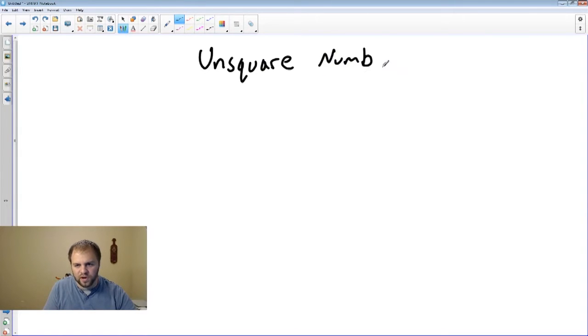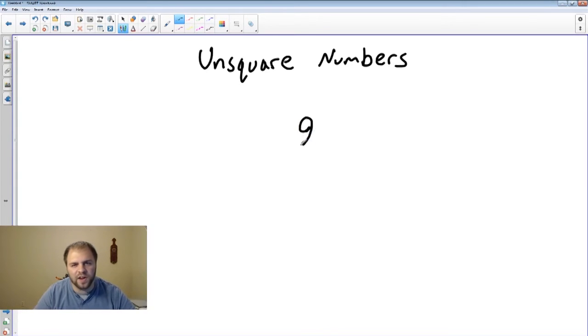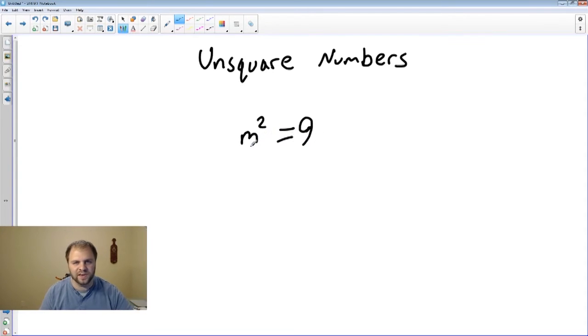We're going to start with the basics. Let's say we have 9 here. This is a square number. We talked about it last time and we want to unsquare it. Well, let's look at it written like this: M squared equals 9. So if we break it down, now we can unsquare it. M is the number we're going to unsquare to. We're going to unsquare 9 so we can figure out what M is.